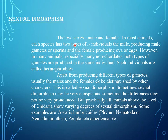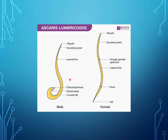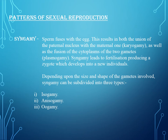The two sexes and sexual dimorphism. In most animals, each species has two types of individuals: the male producing male gametes or sperms, and the female producing ova or eggs. However, in many animals, especially many non-coordates, both types of gametes are produced in the same individual — such individuals are called hermaphrodites. Apart from producing different types of gametes, usually the male and female can be distinguished by other characters; this is called sexual dimorphism. Sometimes sexual dimorphism may be very conspicuous, sometimes the differences may not be very pronounced. Practically all animals above the level of Cnidaria show varying degrees of sexual dimorphism. Some examples are Ascaris lumbricoides (phylum Nematoda) and Periplaneta americana.